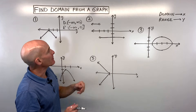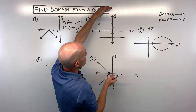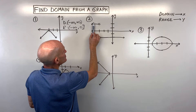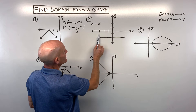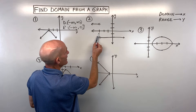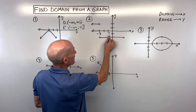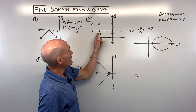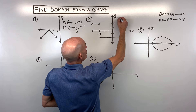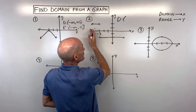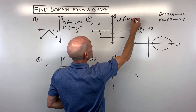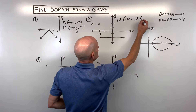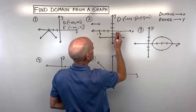Let's look at example number two. For the domain, when I scan across I see it's crossing the graph, but there's a hole here at negative three — basically a gap. Then you can see it's crossing the graph and keeps going to the right forever. So the domain is all real numbers except negative three. Writing that from left to right: negative infinity to negative three, not including negative three (parentheses), then it picks up at negative three, not including negative three, all the way to positive infinity.